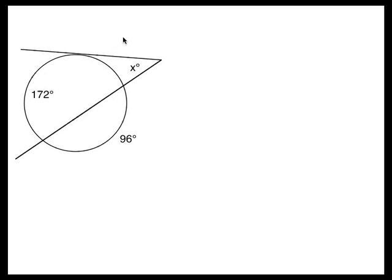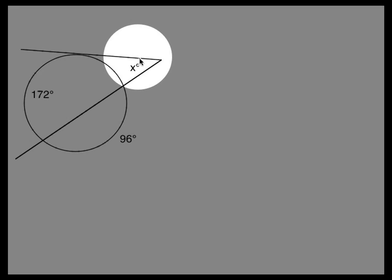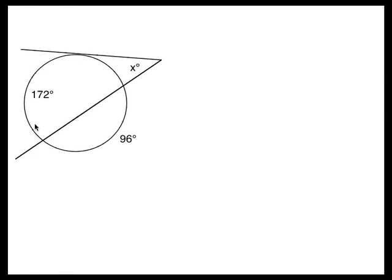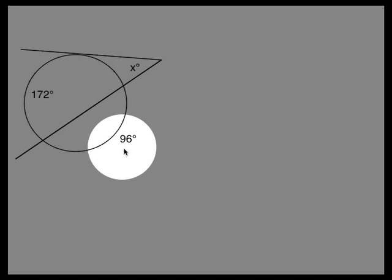Our first example gives us a tangent line and a secant line that intersect to form angle X. We know two arcs, one is 172 degrees and another arc is 96 degrees.